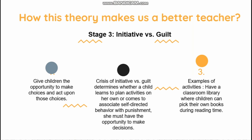Now, how does this theory make us a better teacher? During stage three, initiative versus guilt, children start learning to make choices and act upon them. We can determine whether a child learns to plan activity on her own or comes to associate self-directed behavior with punishment. She must have the opportunity to make decisions. An example activity is having a classroom library where children can pick their own books during reading time, giving children room to make their own decisions.